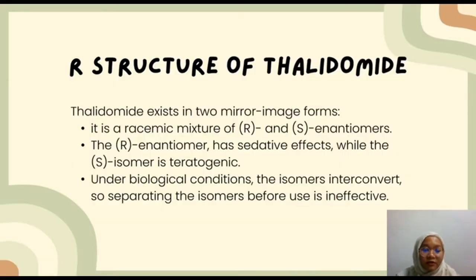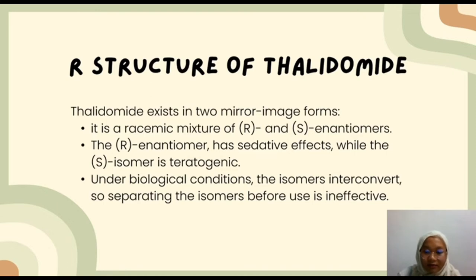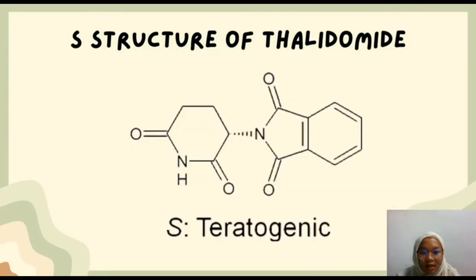So, what is the structure of thalidomide? We have two mirror image forms. Thalidomide is a racemic mixture of R and S enantiomers. The R enantiomer has sedative effects while the S isomer is teratogenic. Under biological conditions, the isomers interconvert, meaning all R isomers also become S isomers. So, separating the isomers before use is not effective. This is the R structure of thalidomide and the S structure of thalidomide, which is teratogenic.